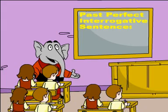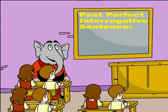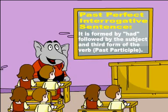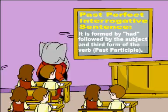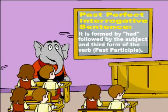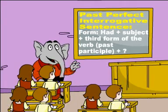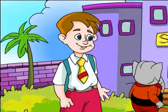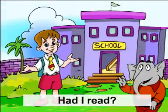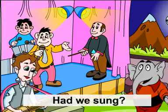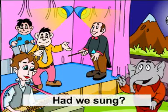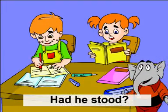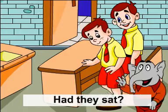2. Past perfect interrogative sentences. It is formed by 'had' followed by the subject and the third form of the verb (past participle). Formula: Had + subject + third form of the verb (past participle). Examples: Had I read? Had we sung? Had you played? Had he stood? Had they sat?